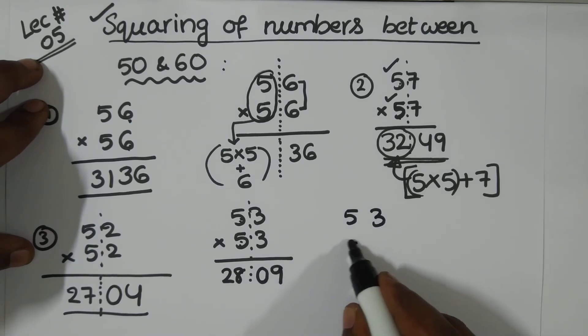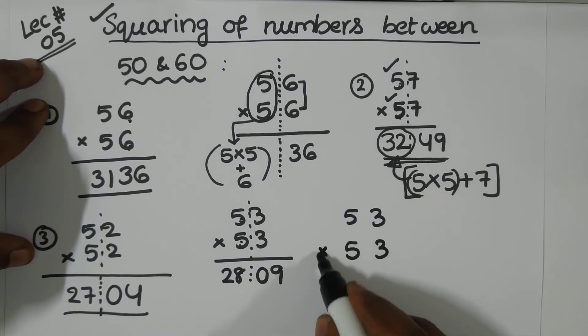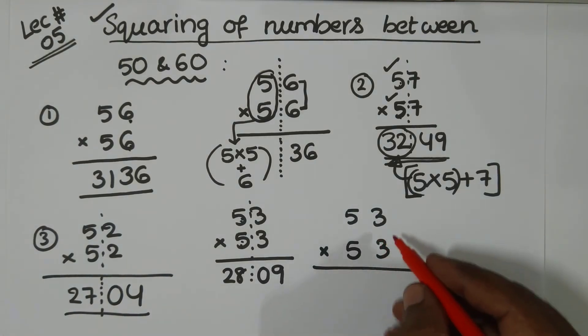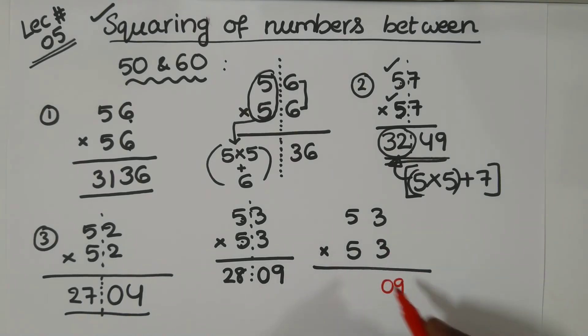If you have 53 multiplied by 53, you can make it this way. No problem. So, what I have here now? 3, 3 is 9. So, 0, 9.